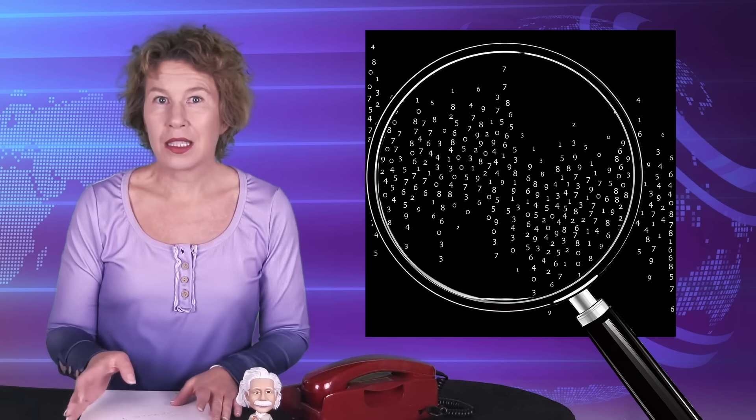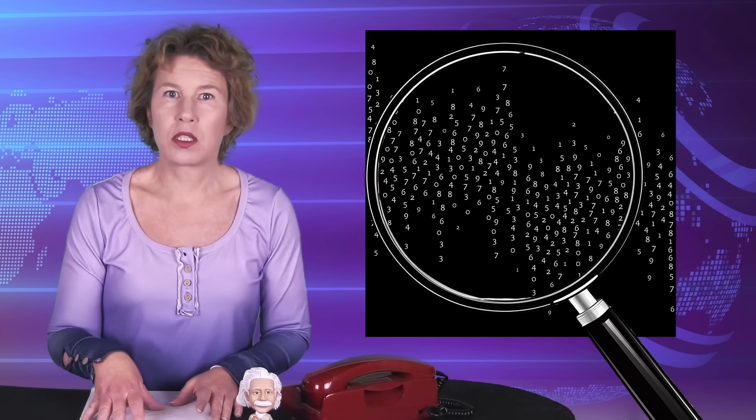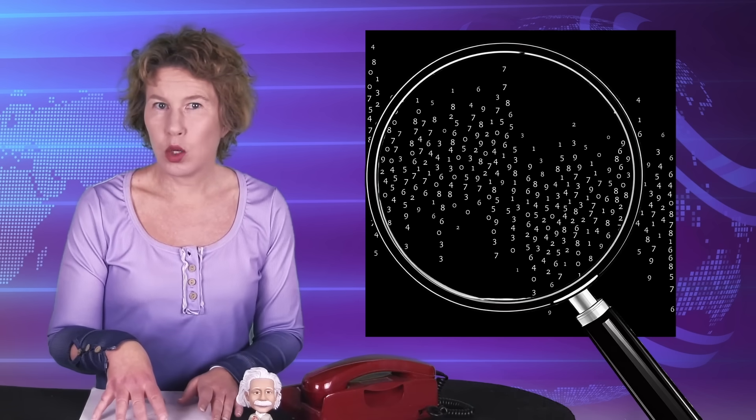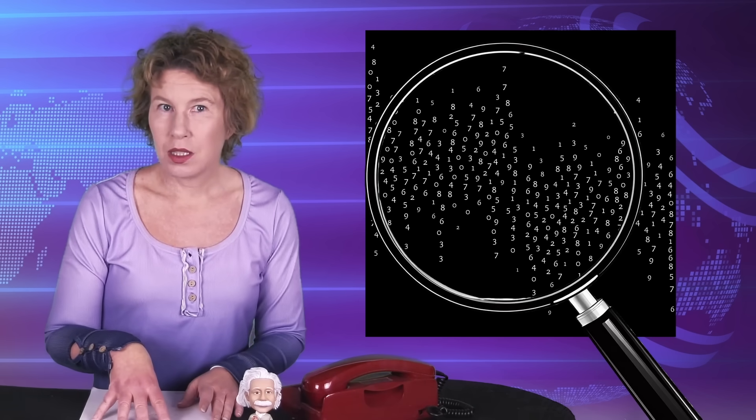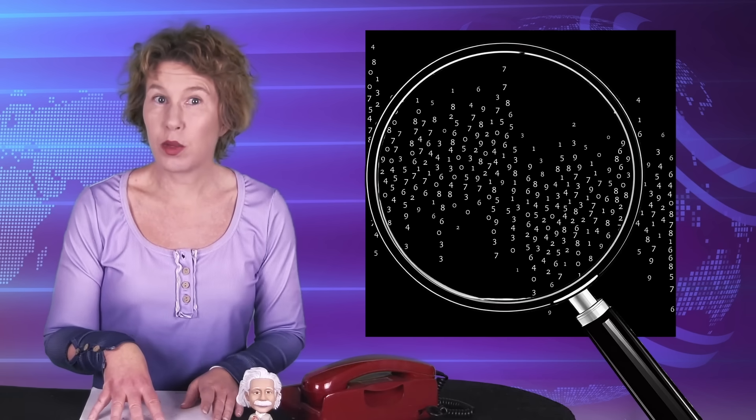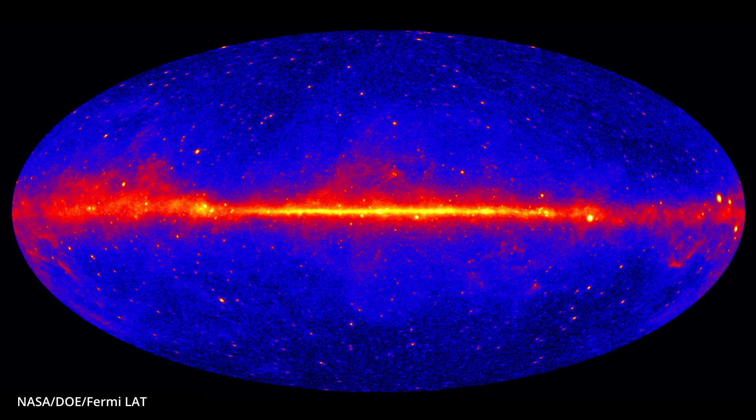For one thing, it isn't like no one's ever looked at the Fermi data before. This data has been analyzed forward and backward. So if someone does a new analysis and finds something that no one else previously found, maybe they tried a little too hard to find something new.